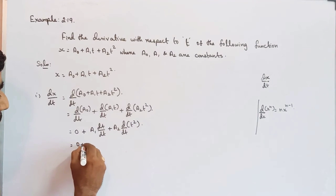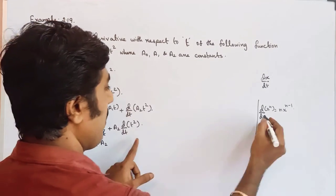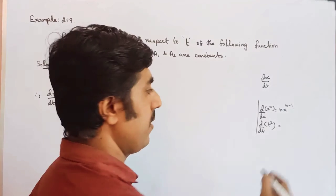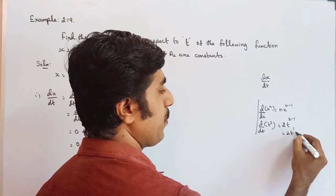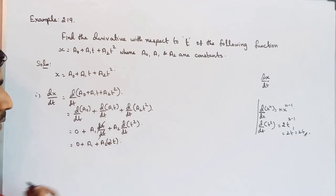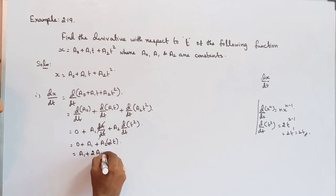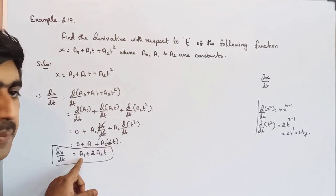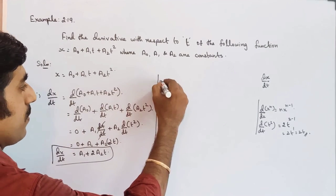So that equals 0 plus a1 — since dt/dt cancels to 1 — plus a2 into 2, using the power rule on t squared: bring down the 2, giving t to the power 2 minus 1, which is 2t. So a2 into 2t, which gives dx by dt equal to a1 plus 2a2t. Differentiating a constant gives 0.